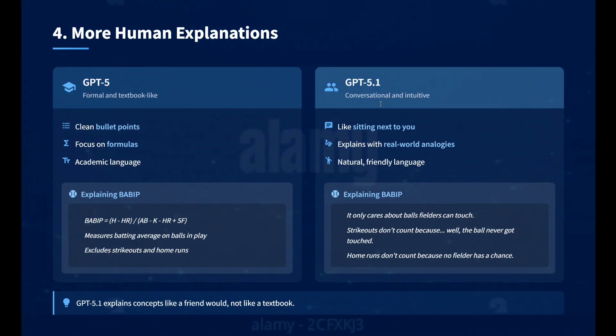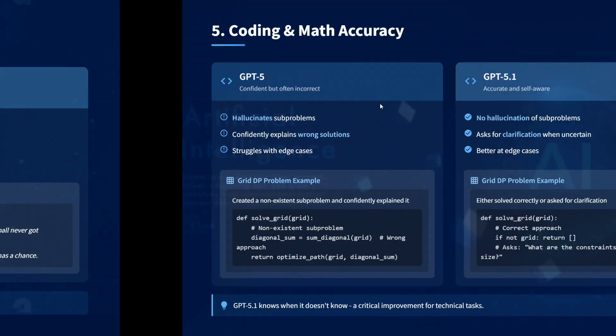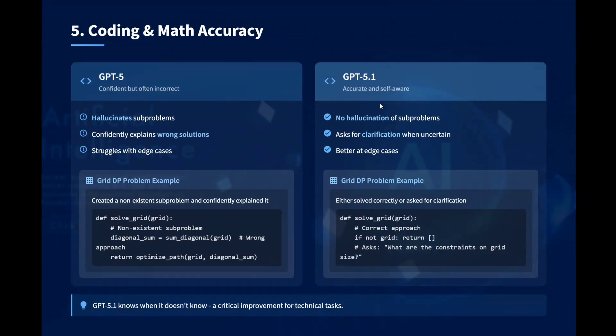On more human explanations: GPT-5 produces clean bullet points with em dashes — certain patterns that are recognizable as AI-generated. In GPT-5.1, if you read the answer it looks like a friend talking to you.